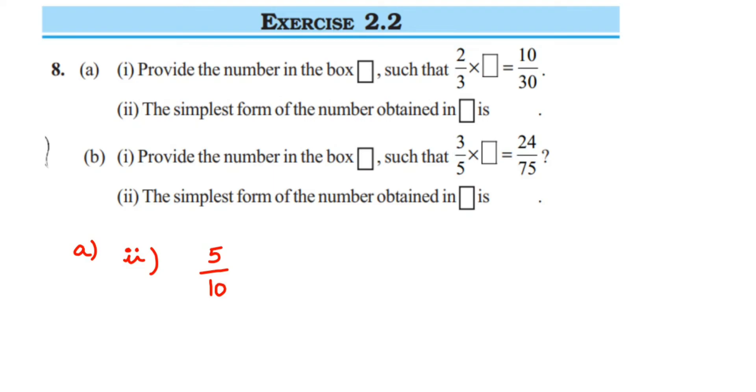Simplest form means we have to cancel the number and bring it to the lowest form. Every number cannot be cancelled, but if possible we have to cancel. You can see 5 and 10 can be cancelled in the 5 table. We're going to cancel this: 5 ones are 5, 2s are 10.